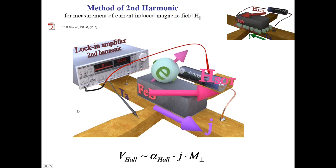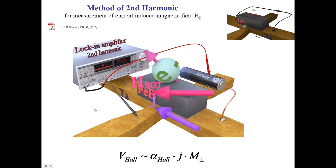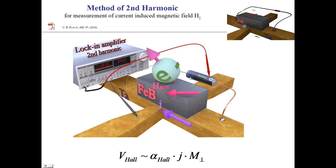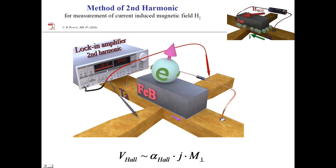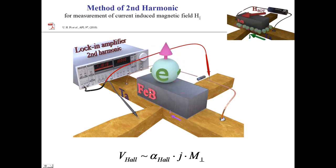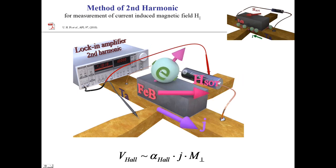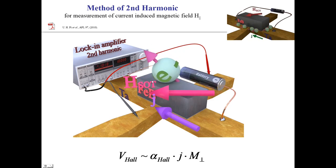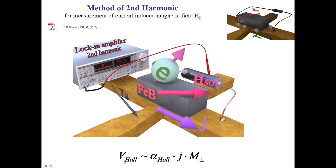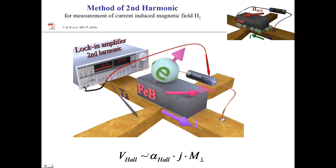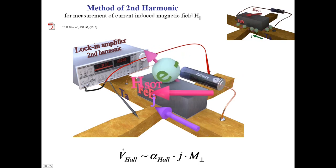The conventional measurement method of current-induced magnetic field in a nanomagnet is the method of the second harmonic. In this case, the current is modulated at low frequency and the second harmonic of the Hall voltage is measured by a lock-in amplifier. The current induces an in-plane magnetic field, shown as a red arrow, under which the magnetization turns out from equilibrium in the perpendicular-to-plane direction. Since the Hall voltage is proportional to both current and magnetization, the beating between oscillations of current and magnetization gives the second harmonic.